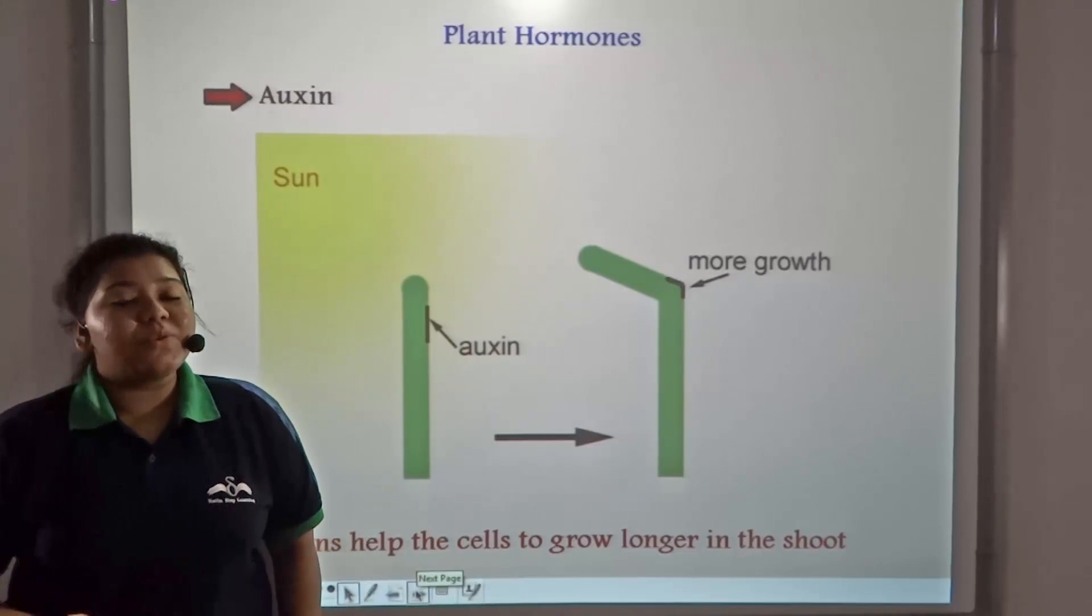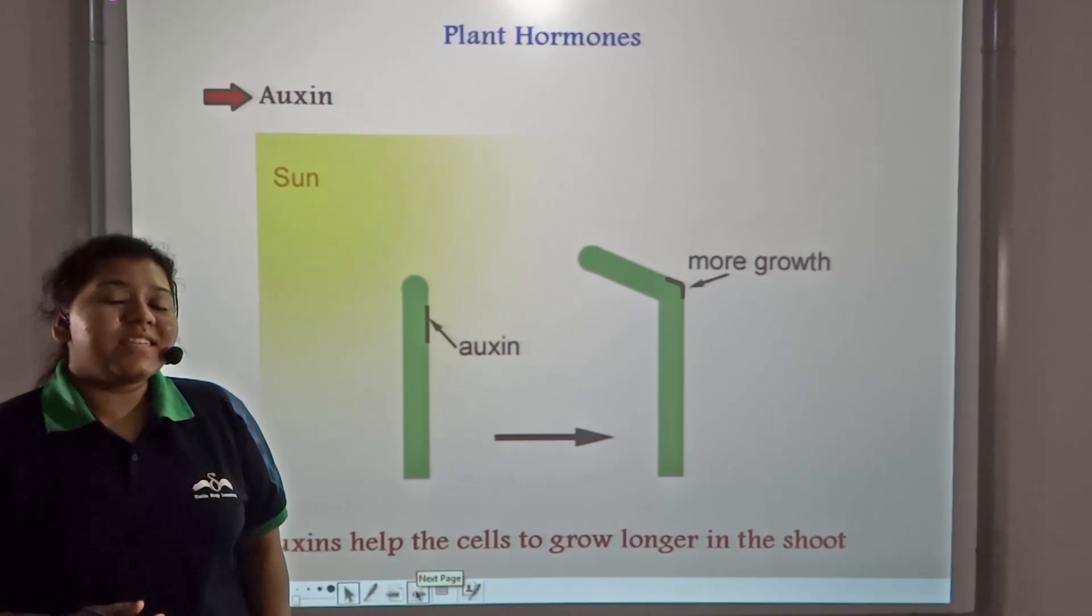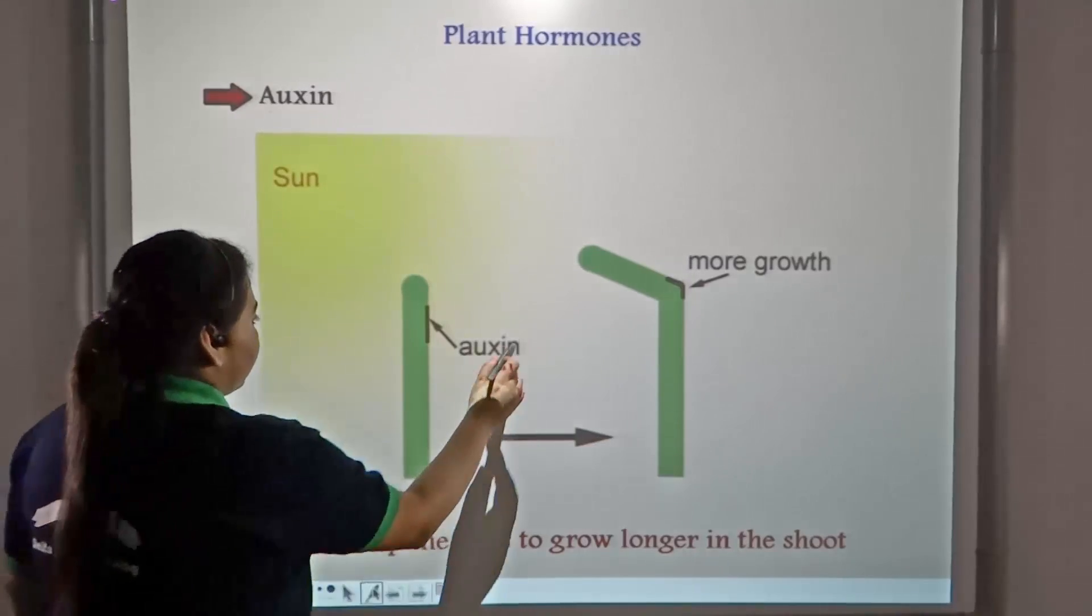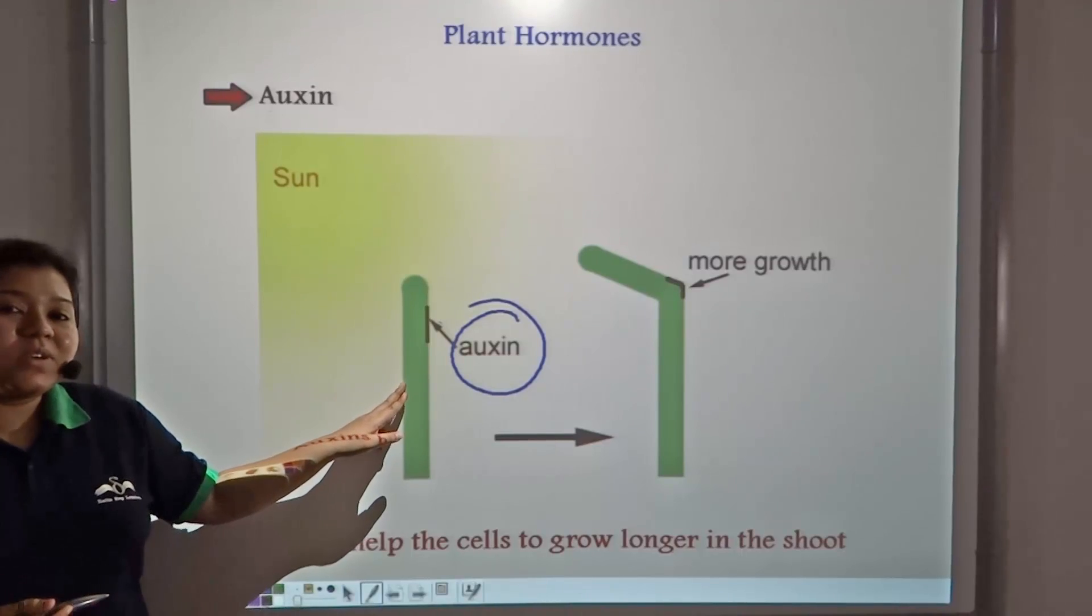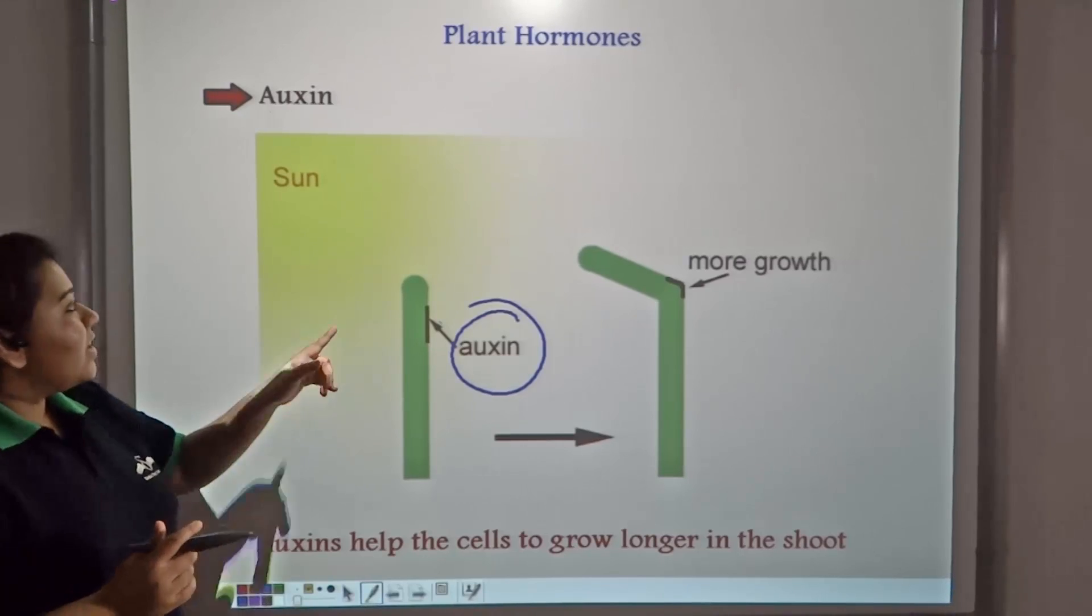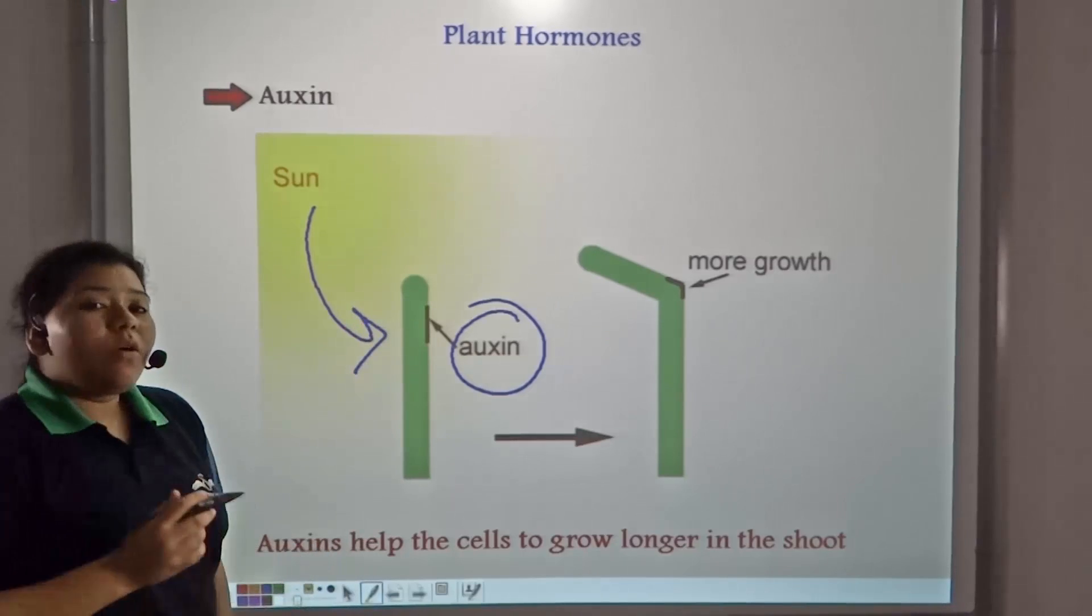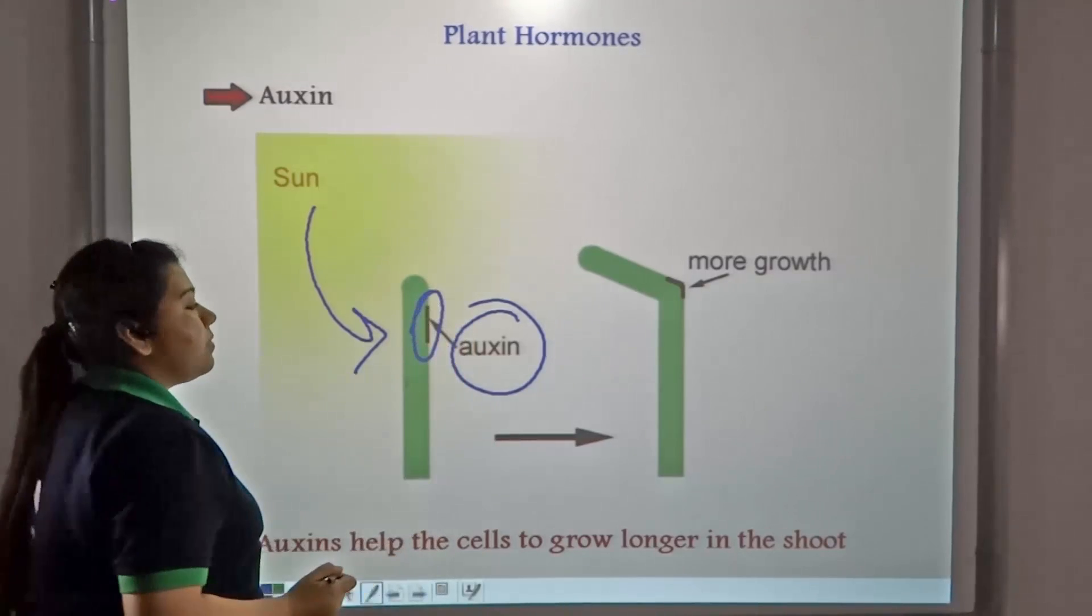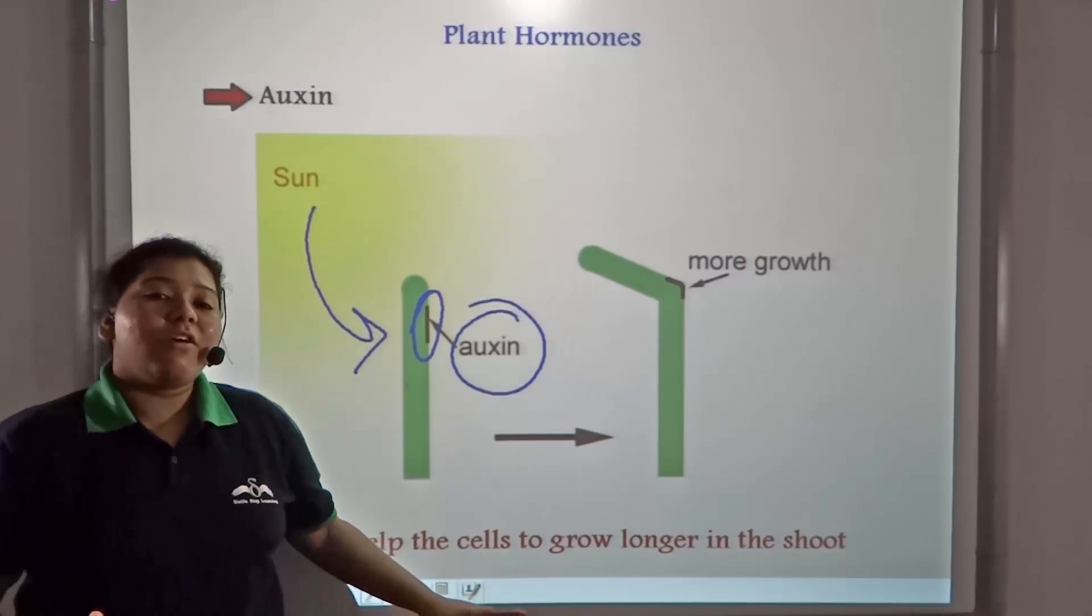How does the shoot move towards the light source? This is facilitated by a hormone or chemical known as auxin. When a shoot detects the light source, auxin is secreted away from the light source. If sun rays are coming from only one direction, then auxin diffuses to the shady part of the stem.